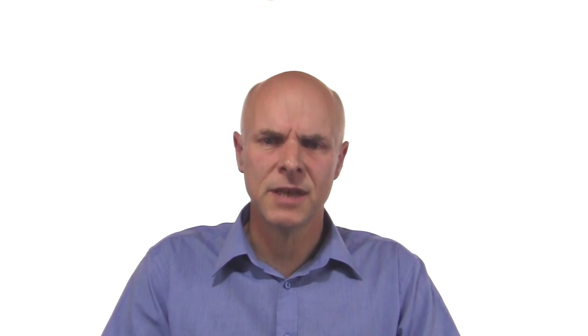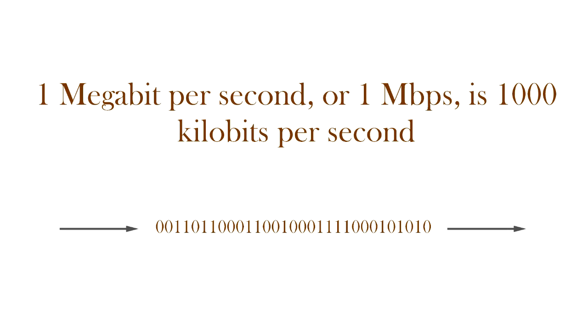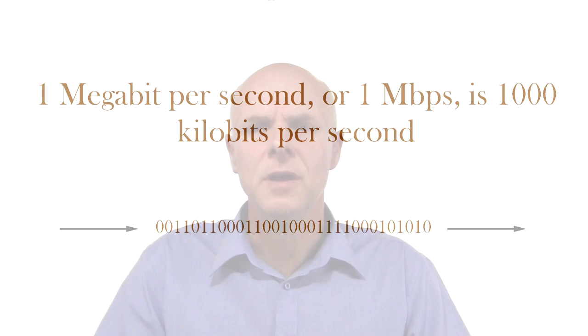Then in around 2001, Telstra introduced the first ADSL broadband service, which ran at a speed of around 500 kilobits per second, or half a megabit per second. One megabit per second is 1,000 kilobits per second. So we've got kilobits per second and megabits per second. Our current average broadband rate in Australia is around 4.9 megabits per second.